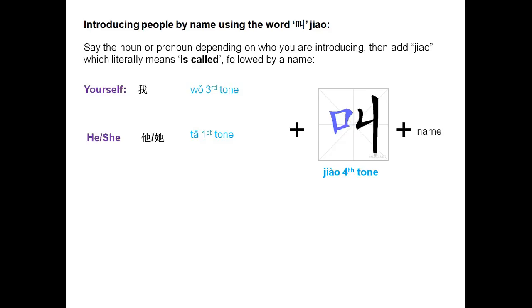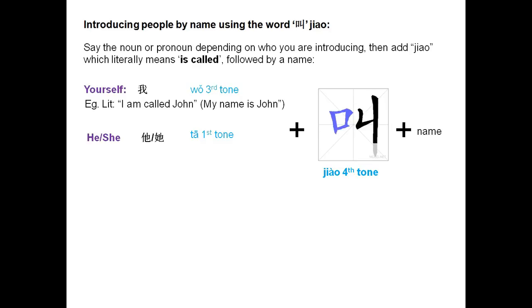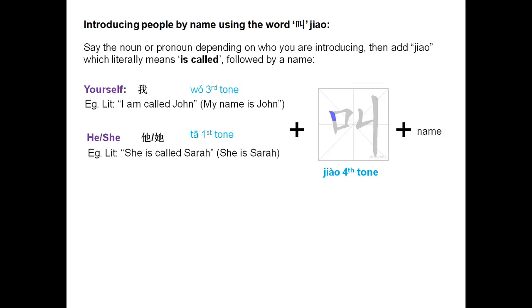For example, 'my name is John': 我叫 John — I am called John. 'She is Sarah' — she is called Sarah: 他叫 Sarah.